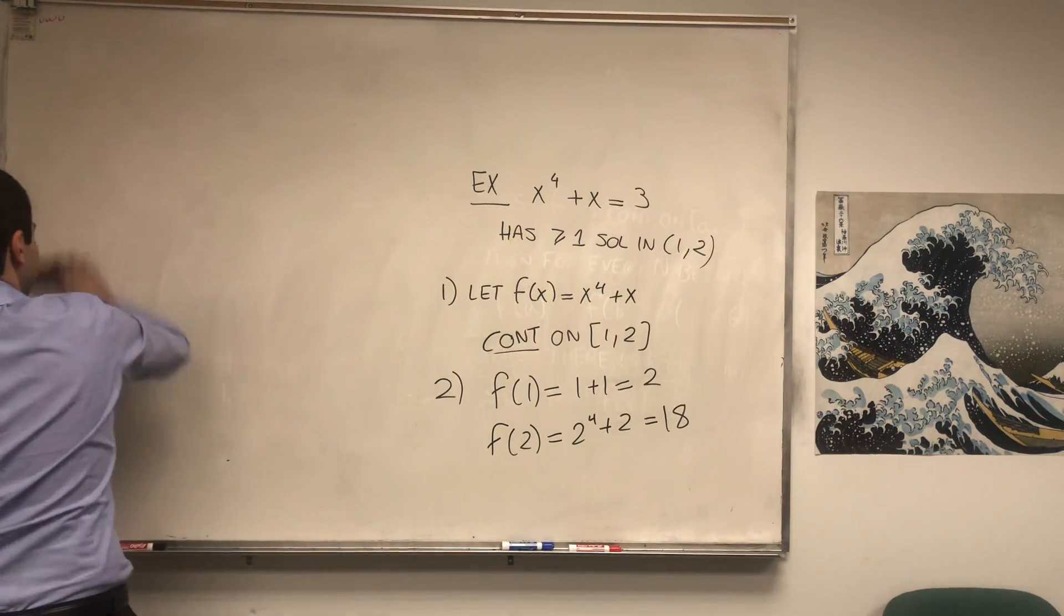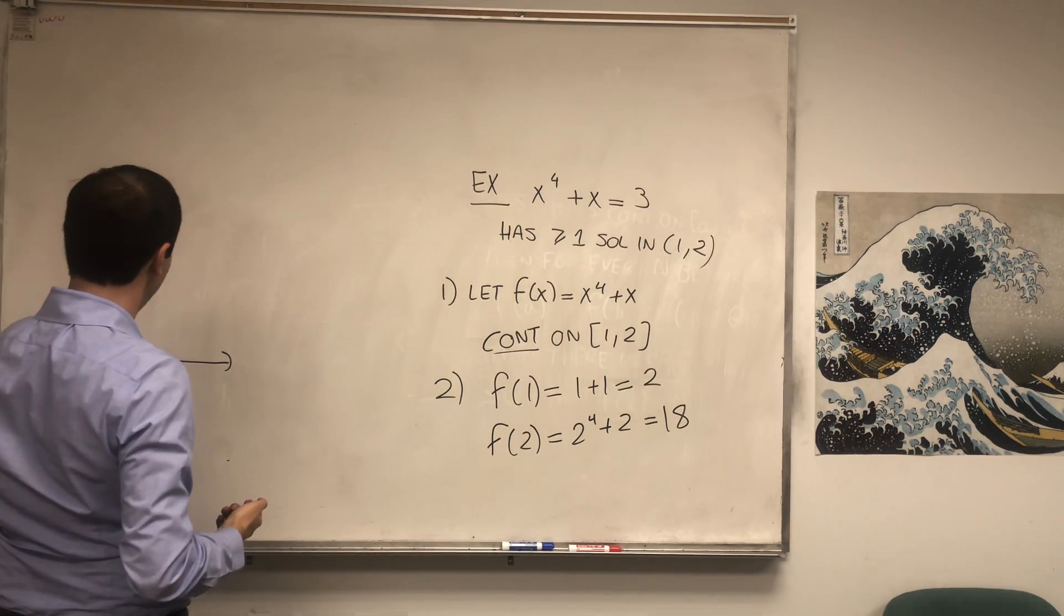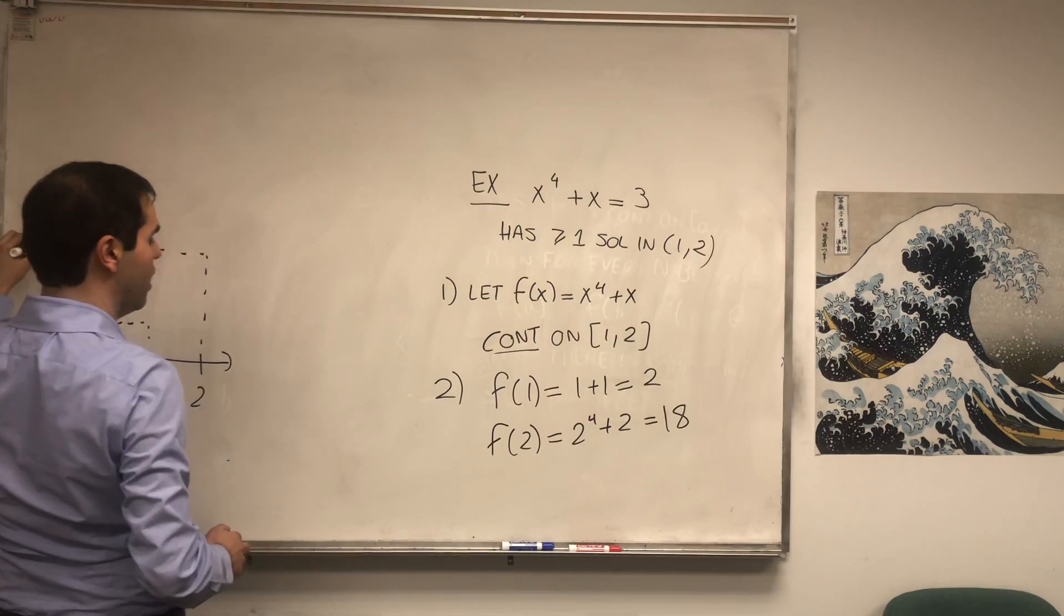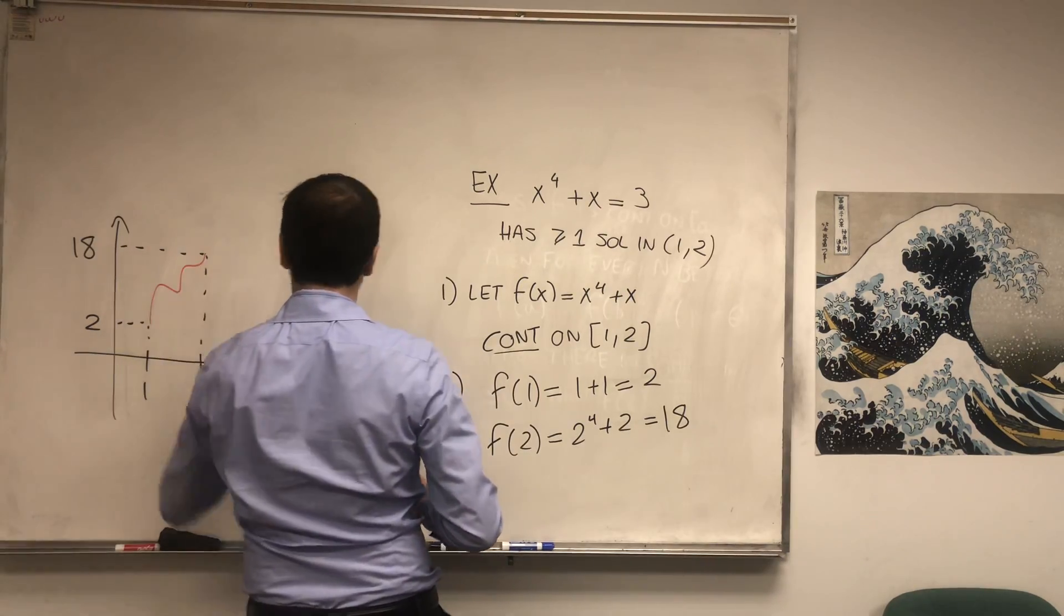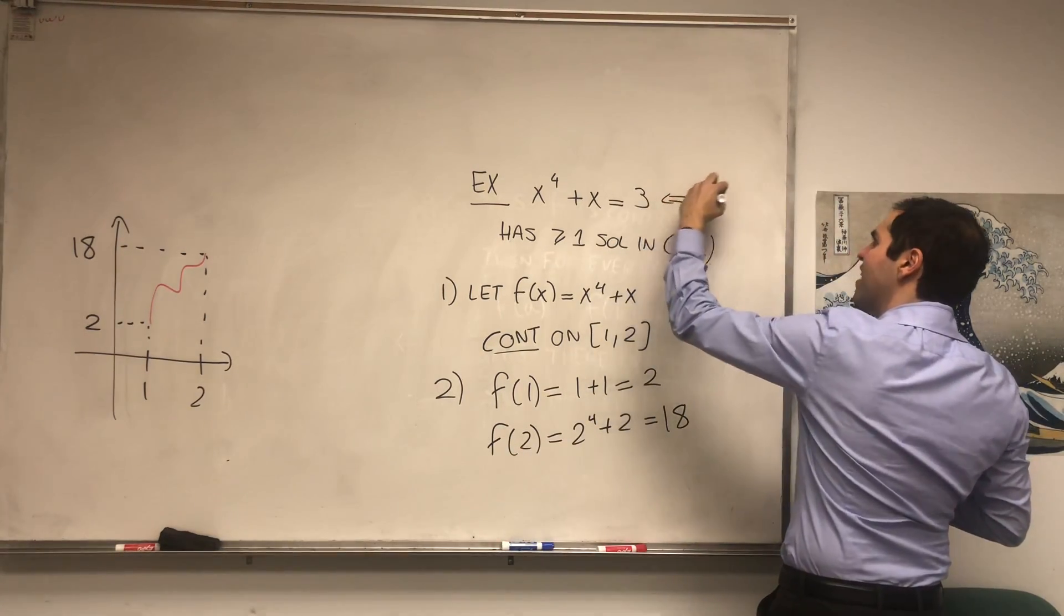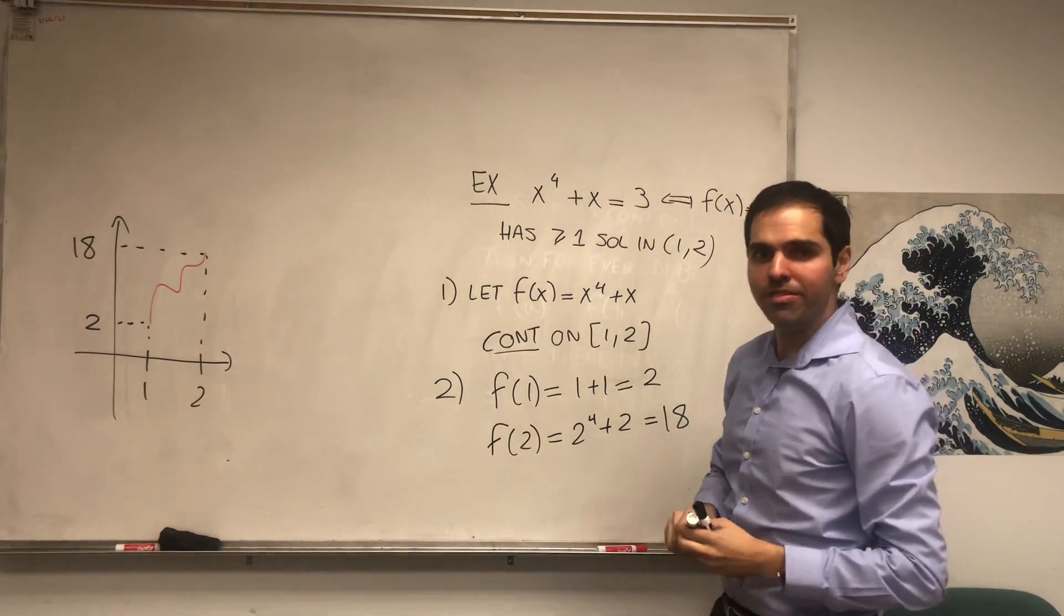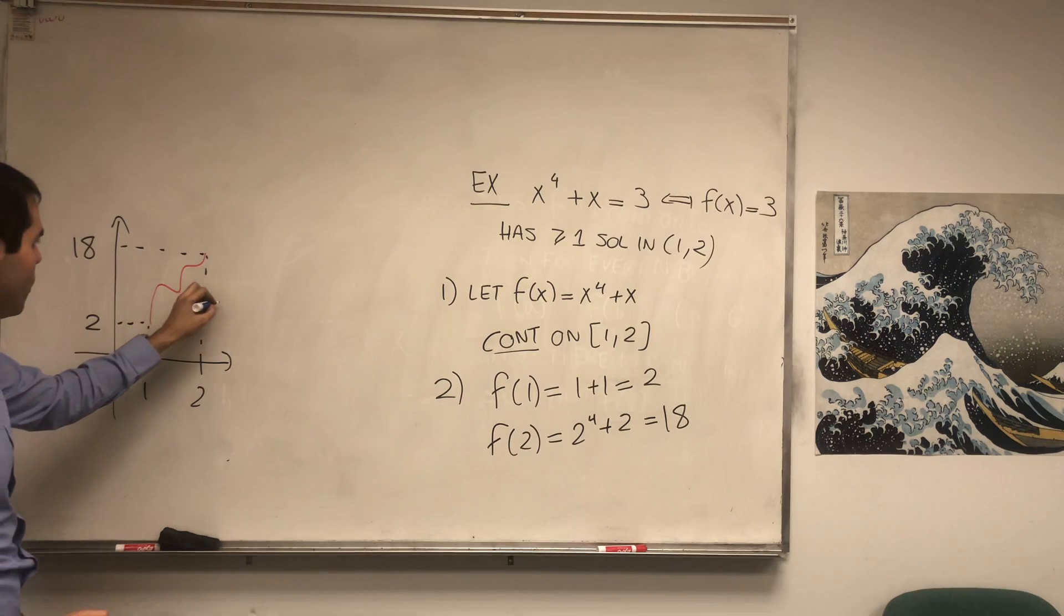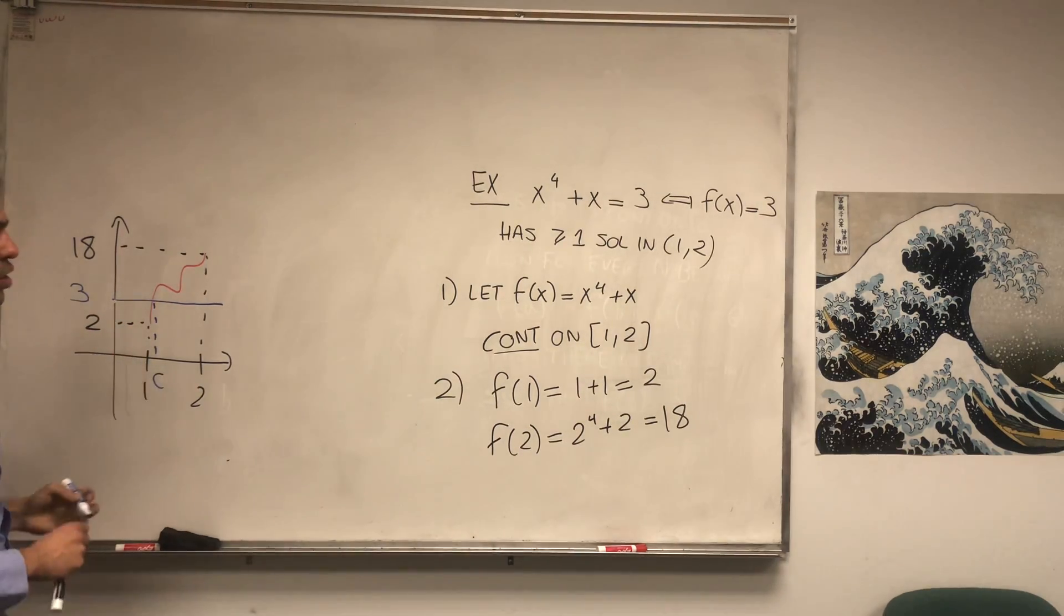So what scenario do we have here? So we have this function. This is 1 and this is 2. It is 2 at 1, it is 18 at 2. It might squiggle back and forth, maybe like this. And the question is, this is equivalent to showing that f(x) equals 3 somewhere. Well, the Intermediate Value Theorem says no matter which value between 2 and 18 you pick, f has to cross the line somewhere. In particular, if you pick the line y equals 3, you're guaranteed to have one solution.